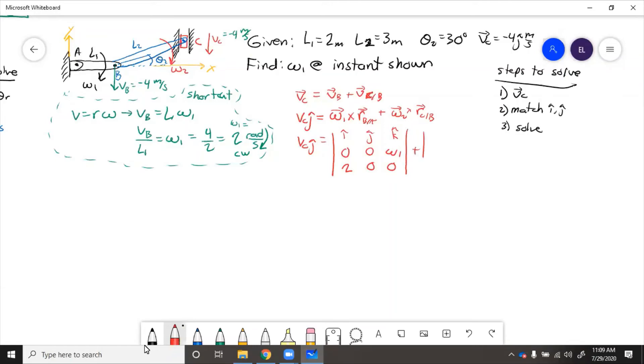Plus i j k, 0 0 omega 2, which we don't know the angular velocity of that connecting rod, but we do know the linear velocity of the slider, so we can put that negative 4 in there. And then rc with respect to b, well theta is 30 degrees, so l2 times cosine theta is going to be the x component, which is 1.5 square root 3, and then 1.5 in the j, and 0.